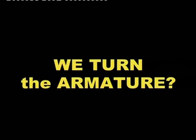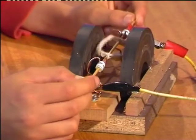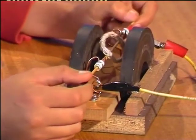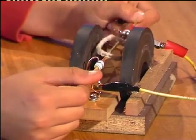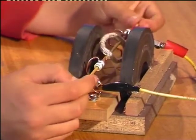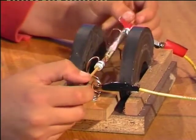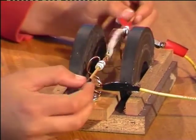What happens if we turn the armature? We are getting electromagnetism in reverse. Turning it like so generates electricity. At the moment I am generating electricity.